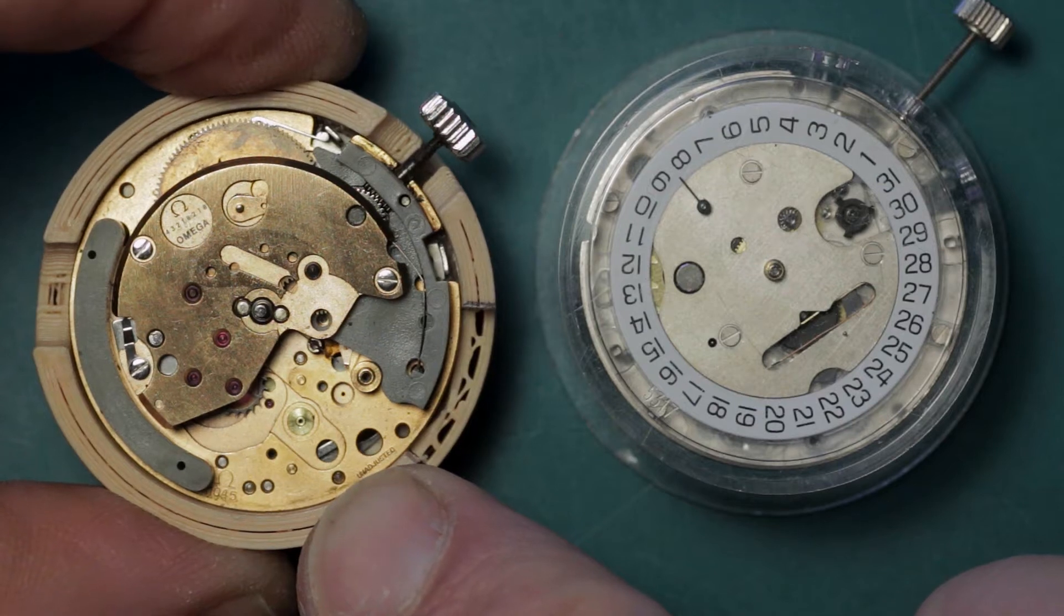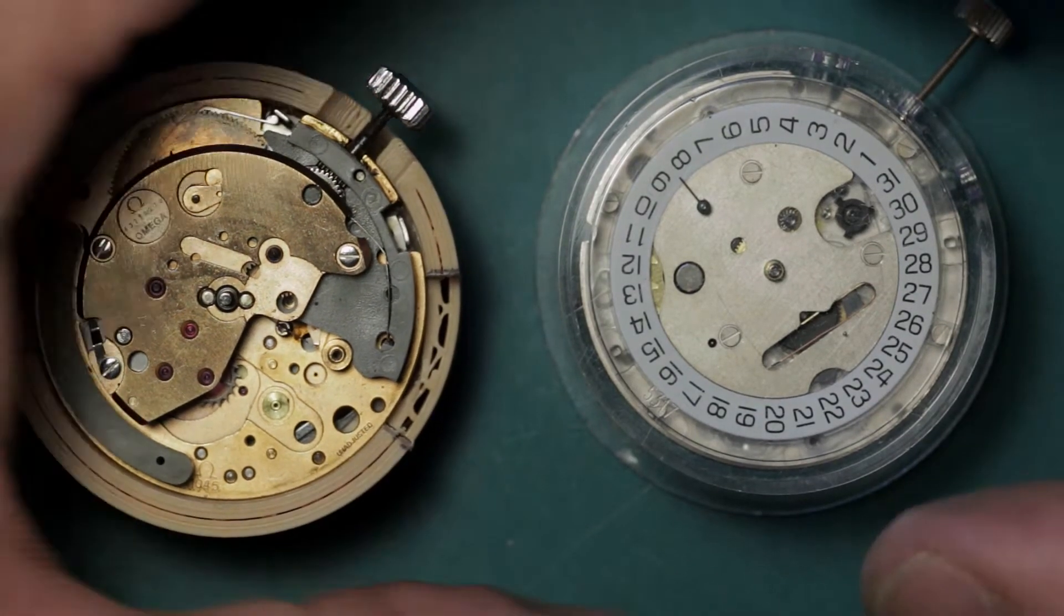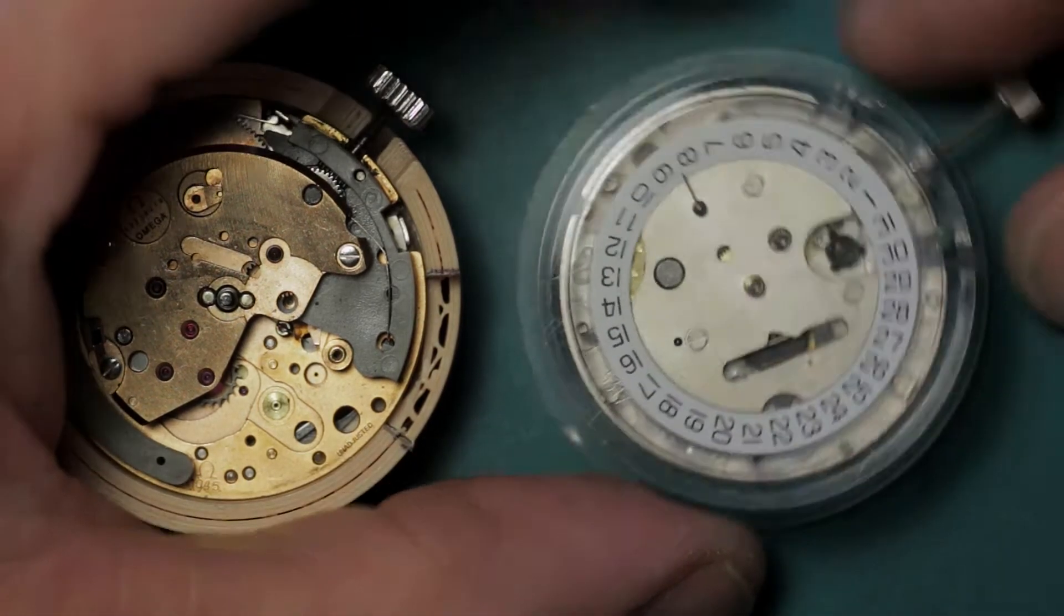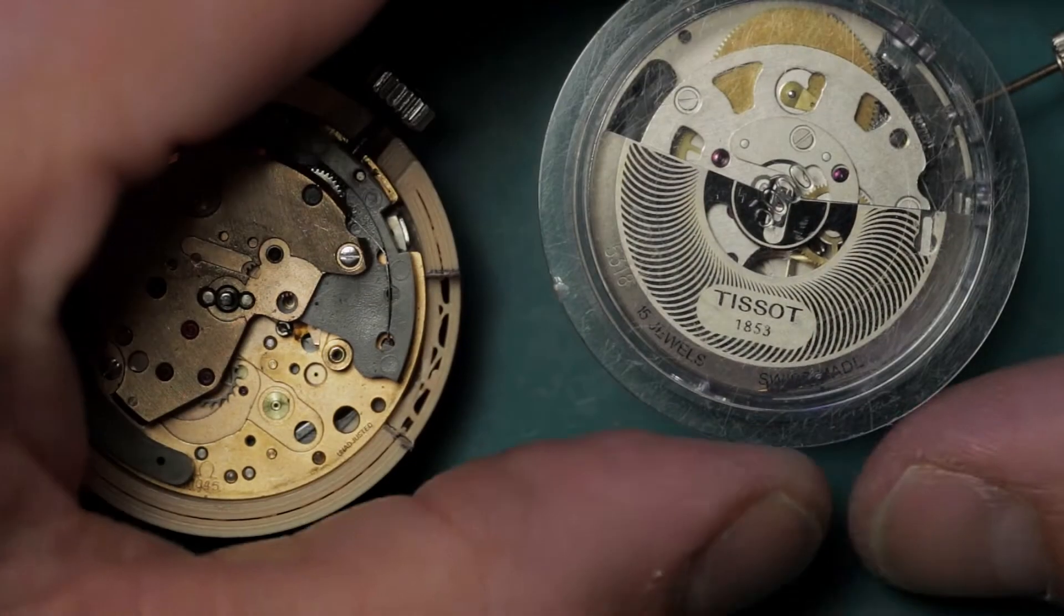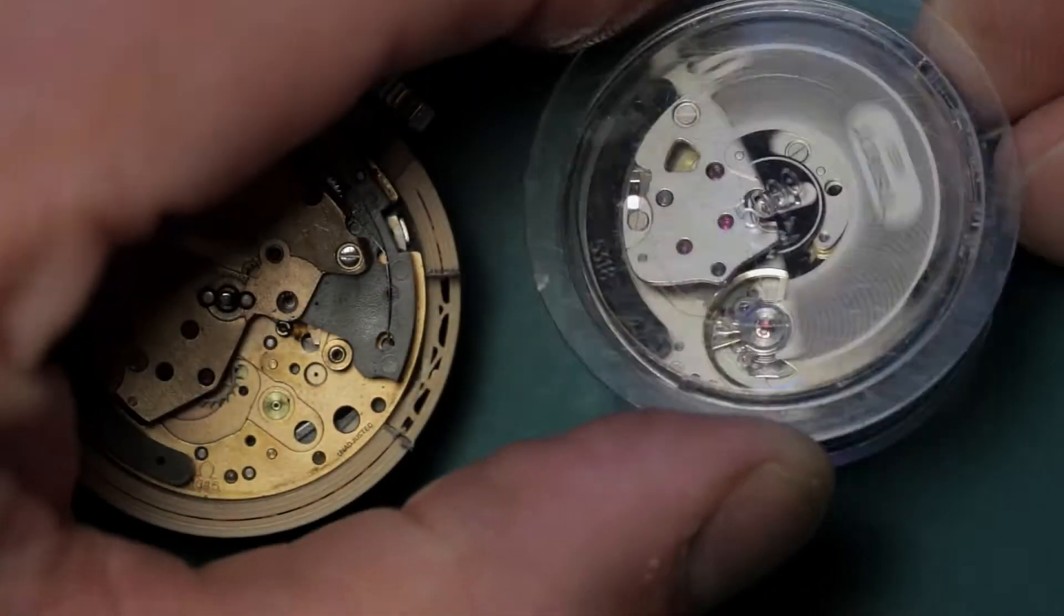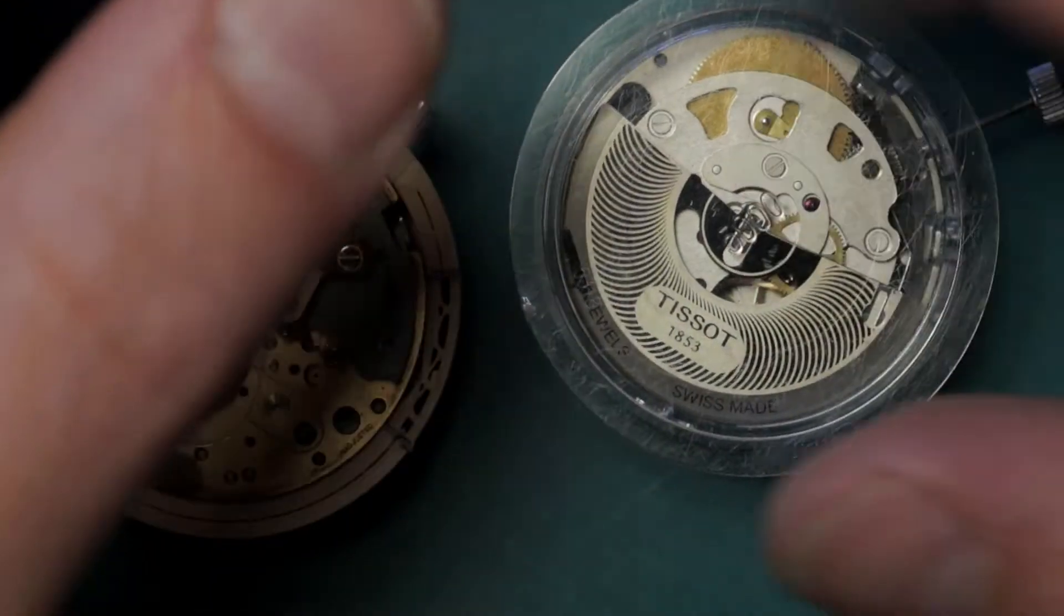Okay, so here we are. Here's the Lemania 5100 Omega 1045, and here's the ETA Co1211. This particular one came to me and unfortunately has a broken chronograph runner, and trying to find the parts for these...